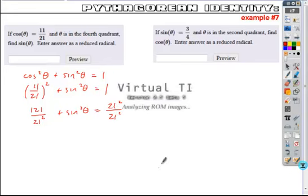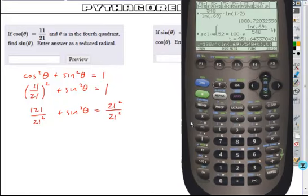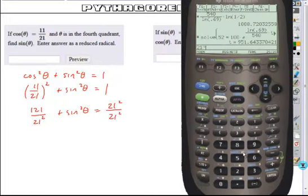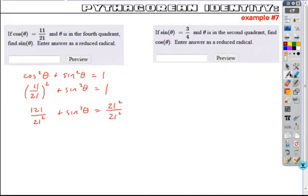So I'm actually am going to write this out, or expand this out. So I'm going to find 21 squared is 441.